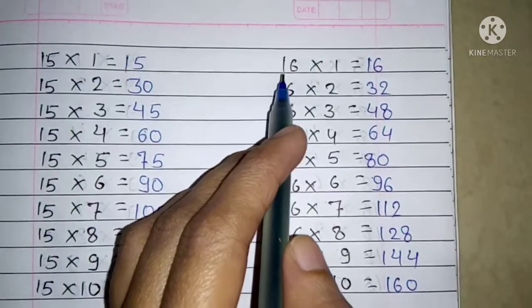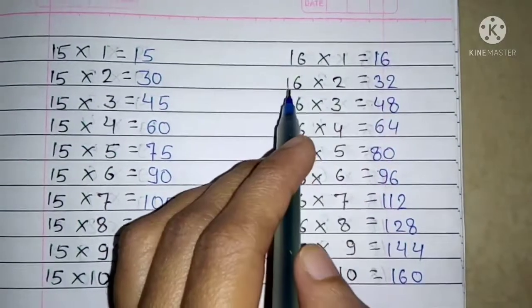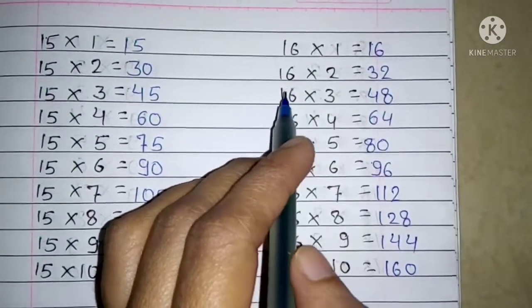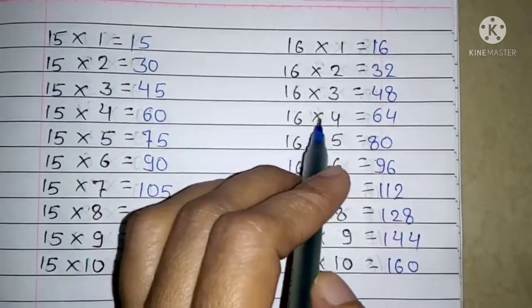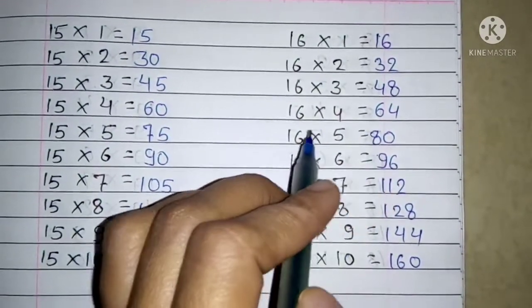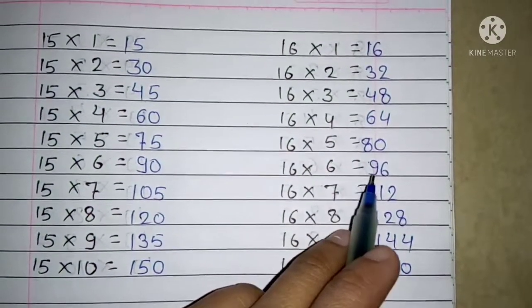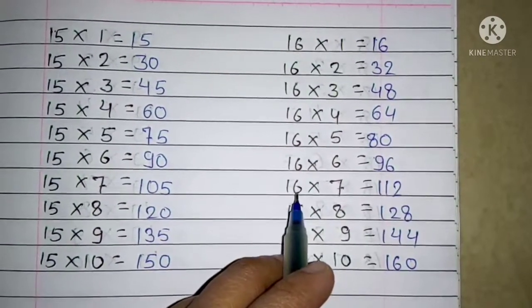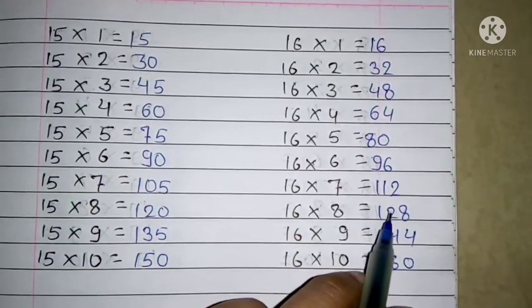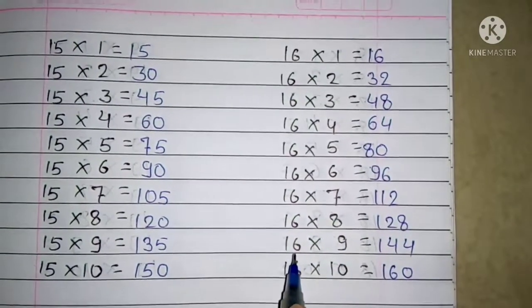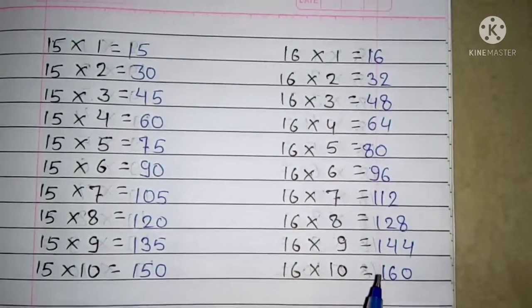Next table 16: 16 ones are 16, 16 twos are 32, 16 threes are 48, 16 fours are 64, 16 fives are 80, 16 sixes are 96, 16 sevens are 112, 16 eights are 128, 16 nines are 144, 16 tens are 160.